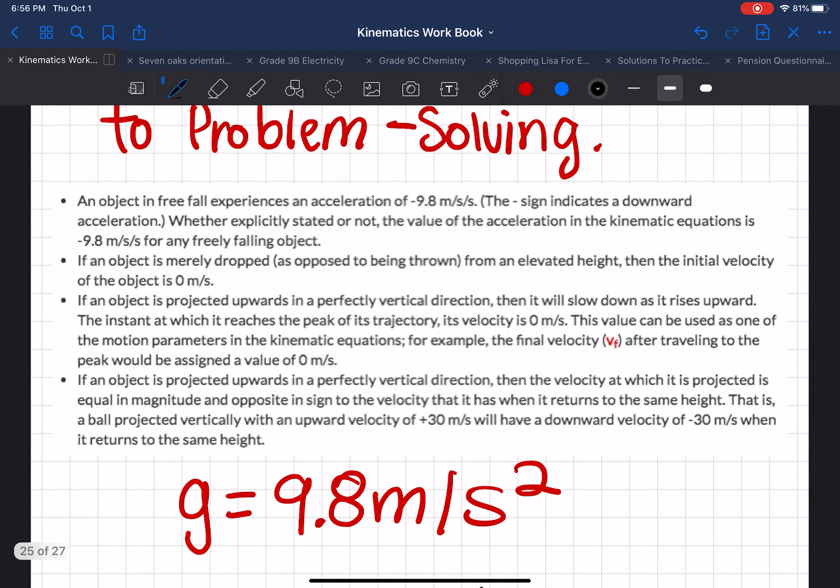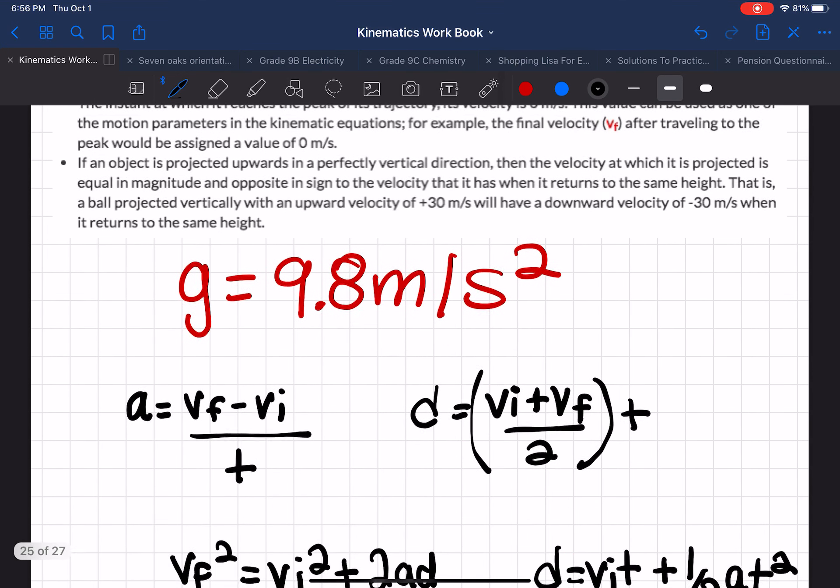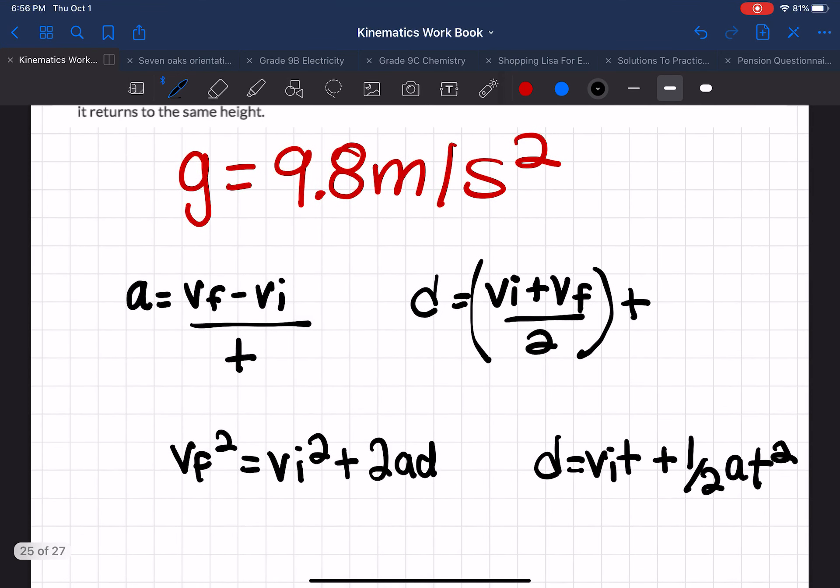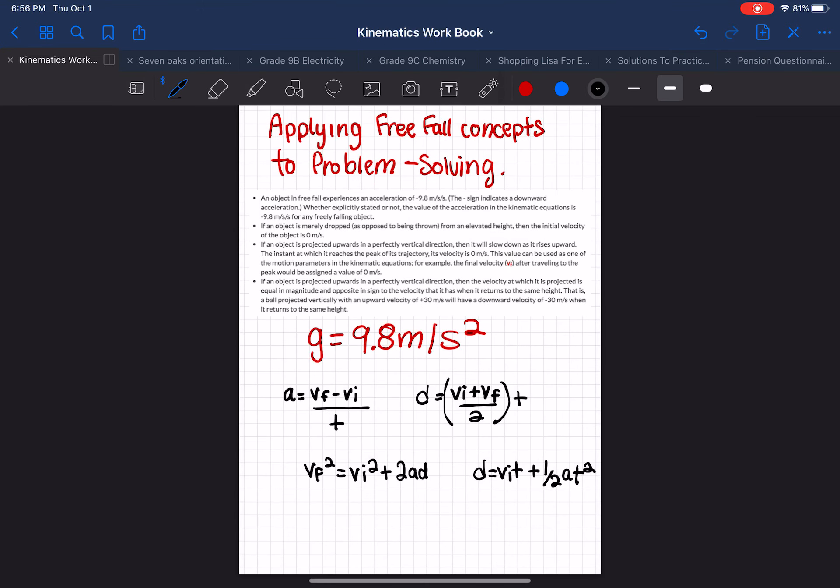So again, gravity given in your formula sheet is 9.8 meters per second squared, and we'll be using it as the acceleration in a lot of our equations. I rewrote the equations that are found in your formula sheet that we will be referring back to when we use our problem-solving steps to solve the next few questions. You can always rewind in the video anytime if you would like to copy down the notes.